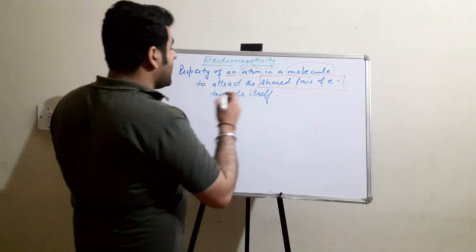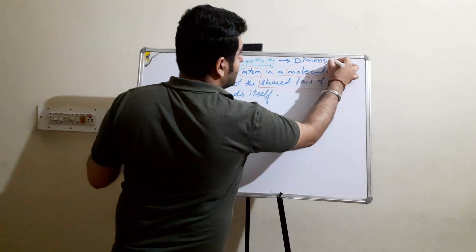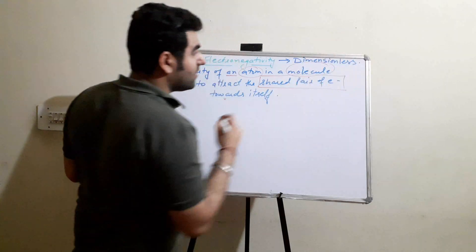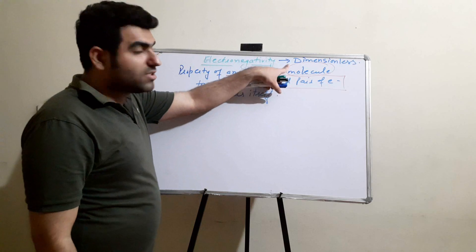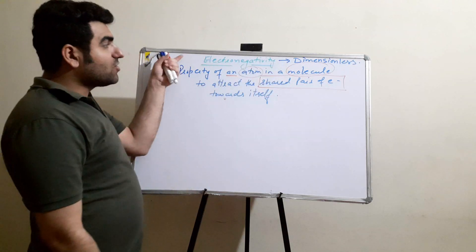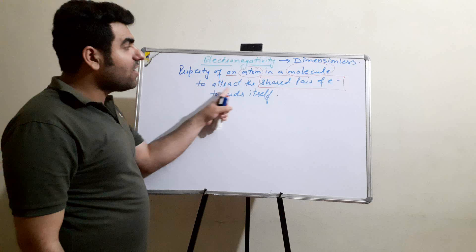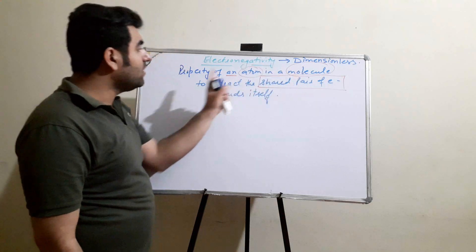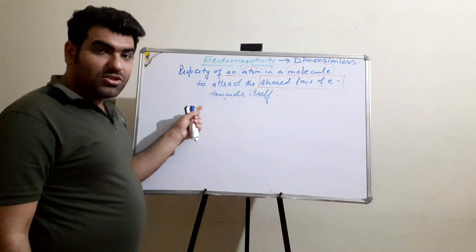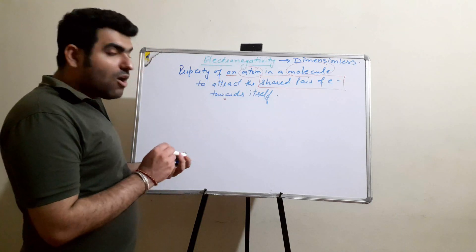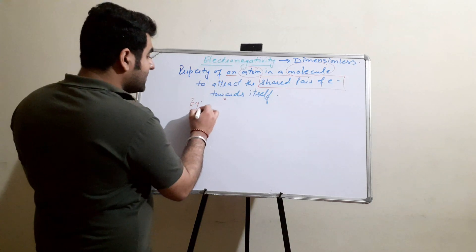Electronegativity is dimensionless. It is measured on various scales, but those scales are all dimensionless. So electronegativity is the tendency or property of an atom in a molecule to attract the shared pair of electrons towards itself.